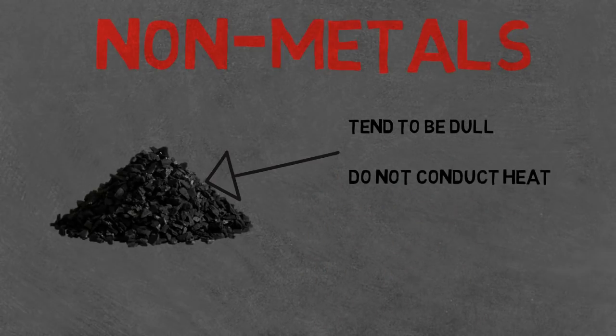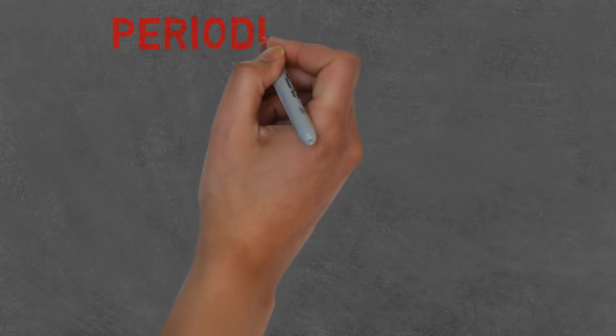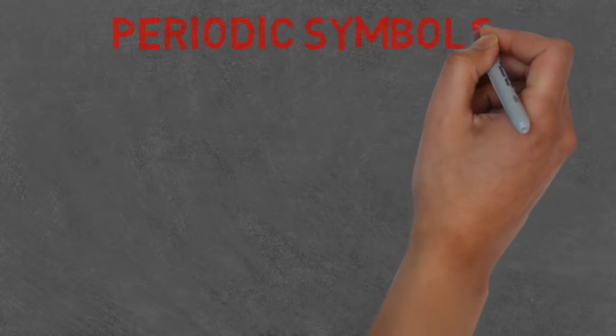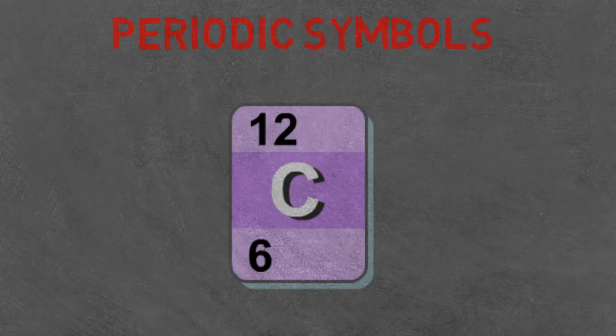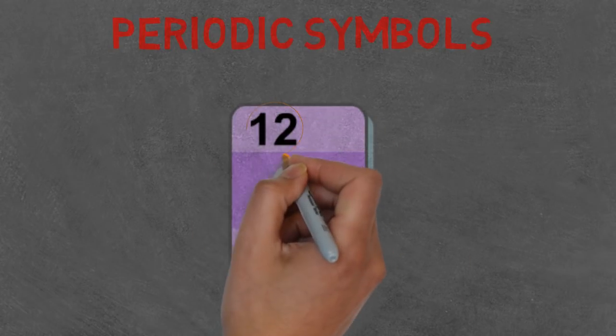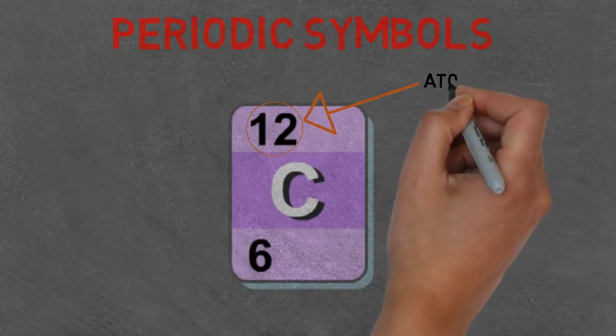If you remember looking at the periodic table, you might have noticed numbers and letters instead of the full name of the elements. If you look at the element in front of us, which is carbon, the top number is the atomic weight. This is how many protons, electrons, and neutrons are in the atom.